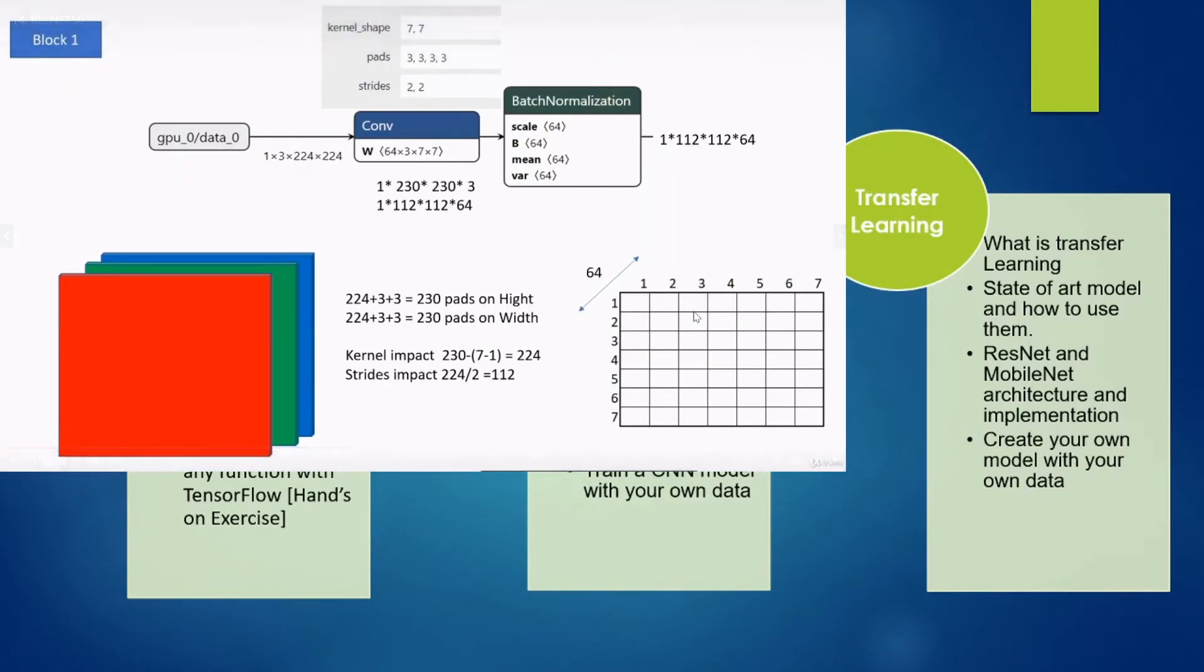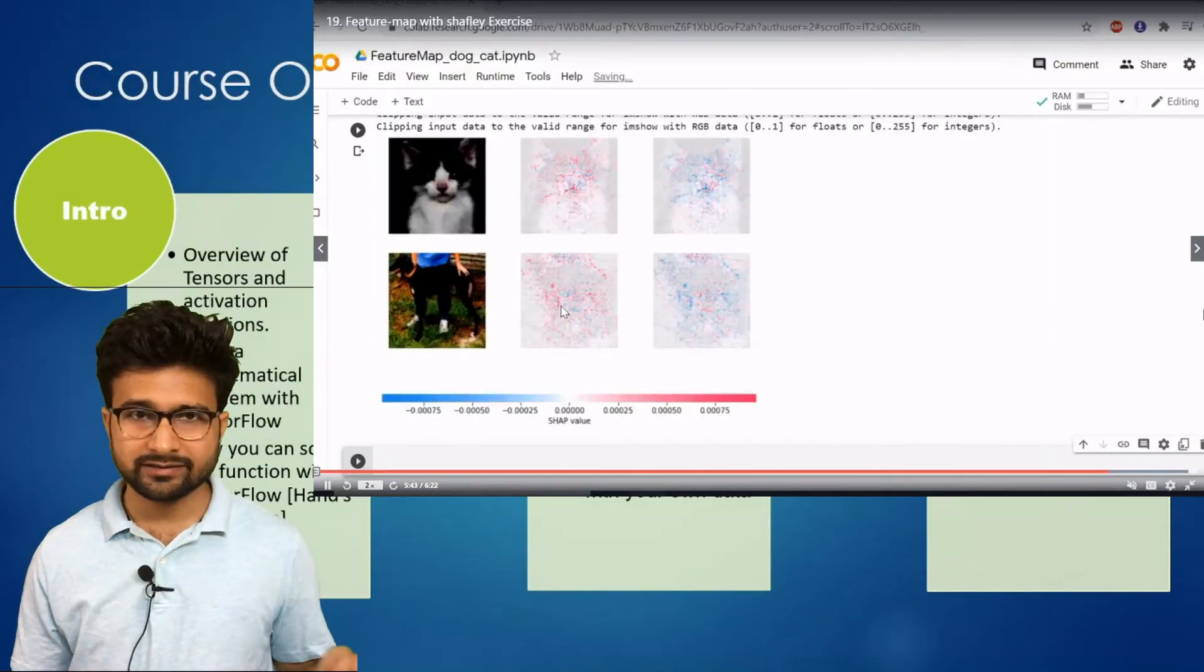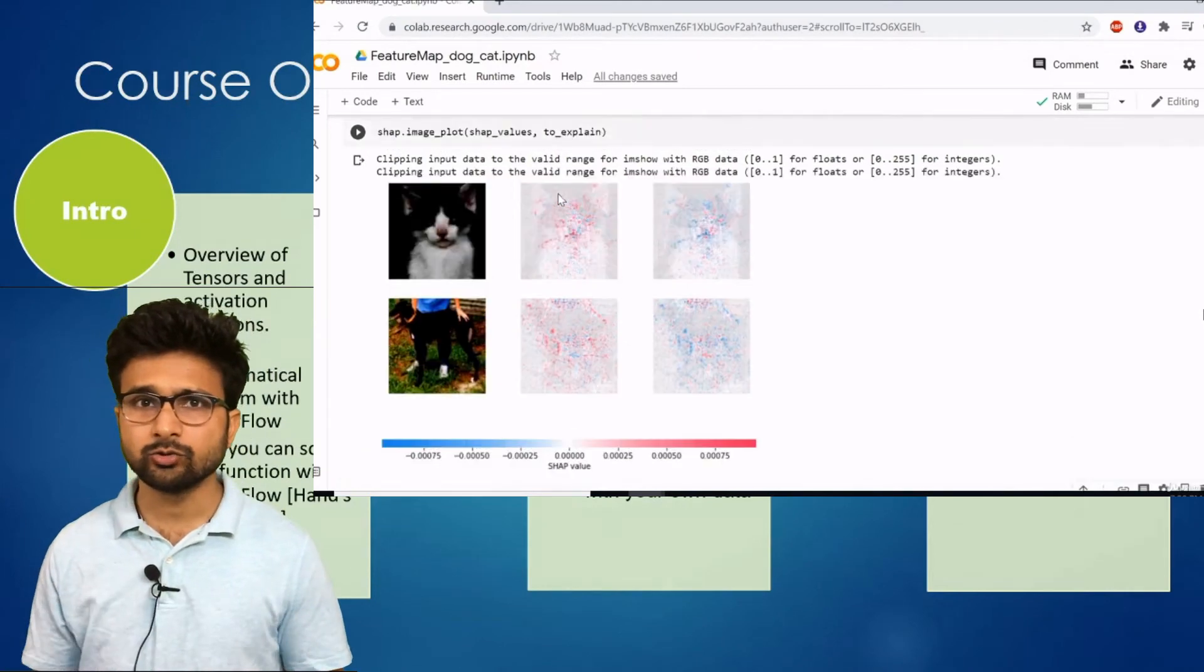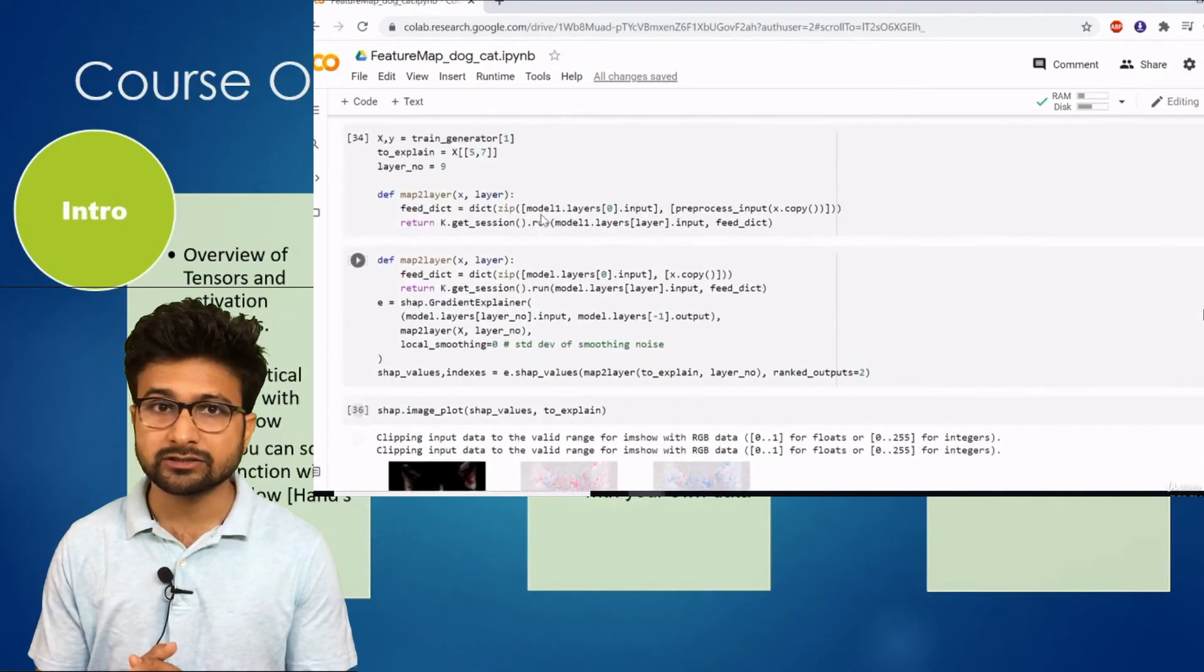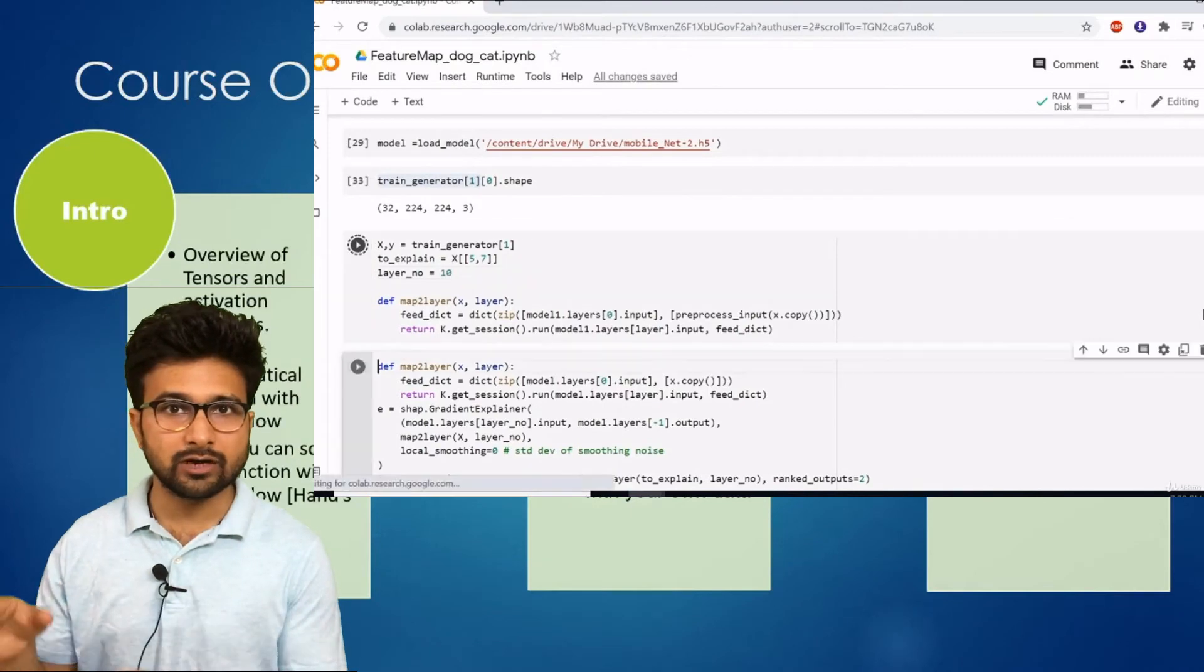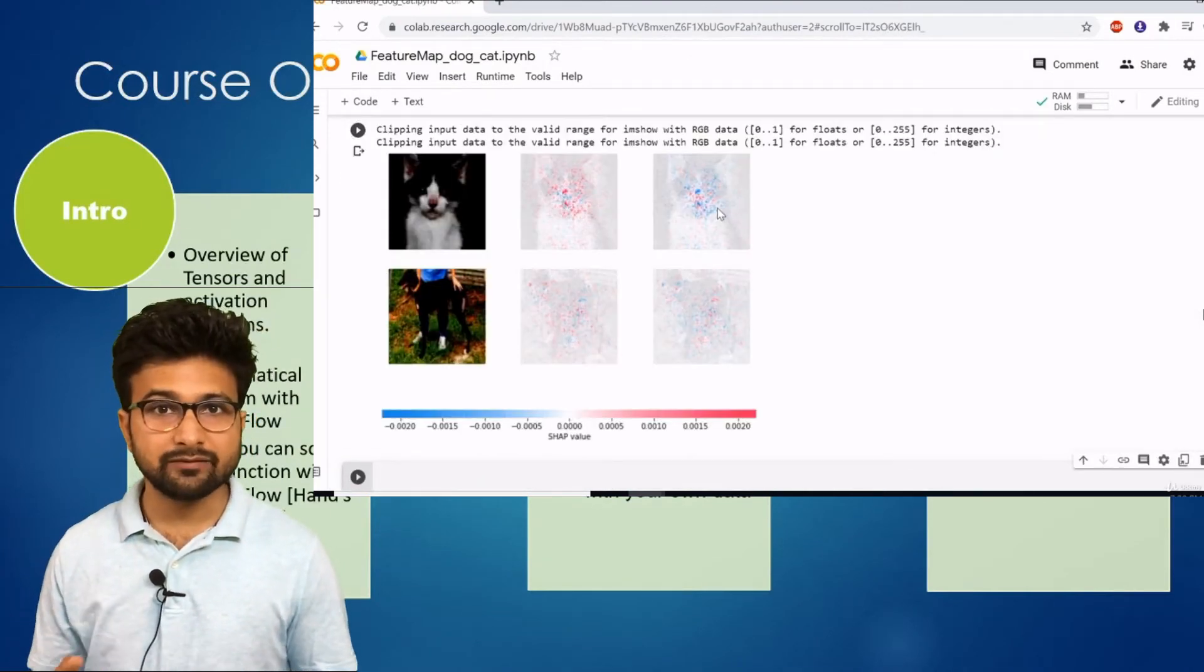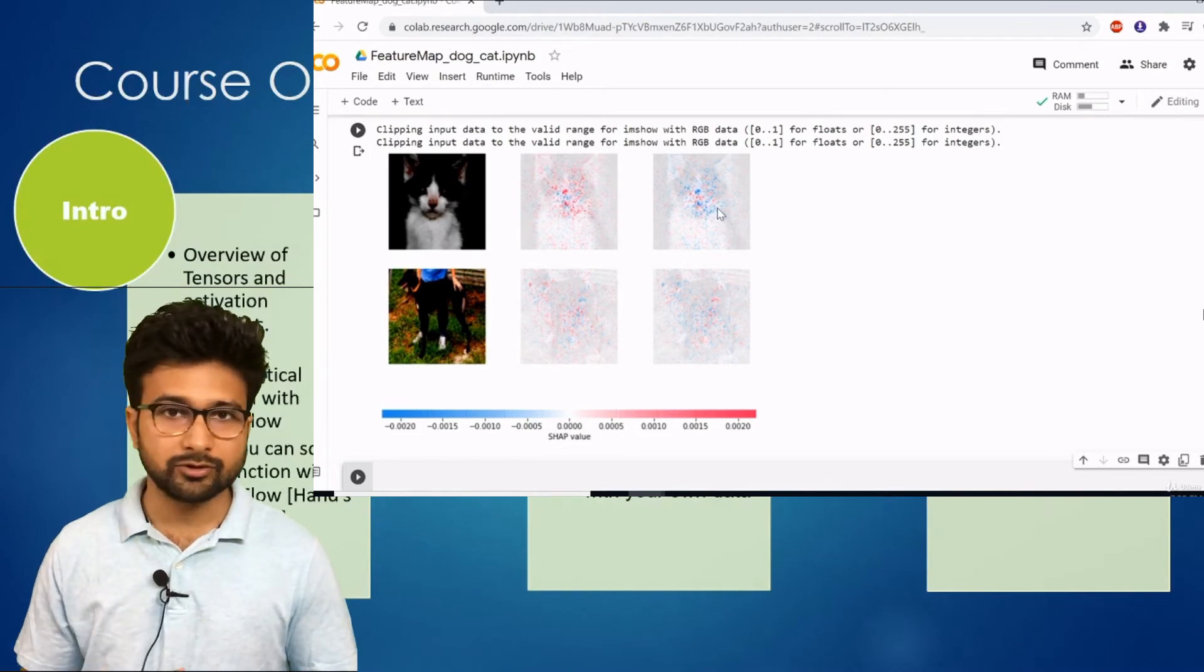Once we are done with the transfer learning part, we will try to create feature maps. And this is quite different which you won't find in any other course. We will try to use Shapley-based detectors which will visualize what is going with the underlying layer of the neural network. And these are some of the very advanced techniques in computer vision.